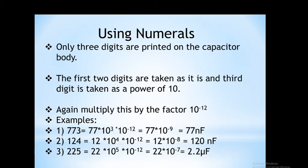For example, if 7, 7, 3 is present on the surface of the capacitor, the first and second significant digits are 7 and 7, and the third is the multiplier 3, meaning 10 to the power 3. Multiplying by 10 to the power minus 12, the final resultant value is 77 into 10 to the power minus 9. Minus 9 means nano, so the final standard value of this capacitor is 77 nanofarad.